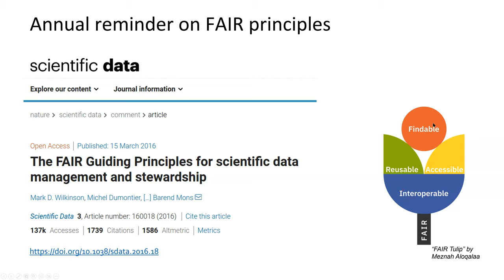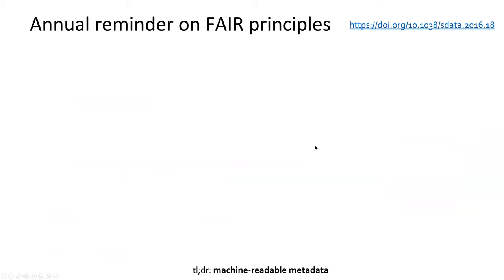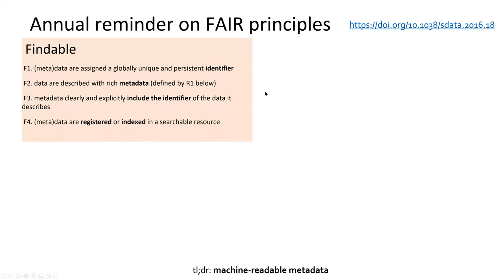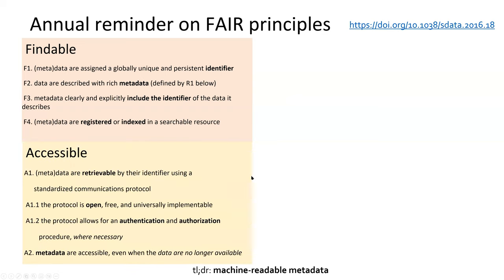One view is that interoperable should be at the bottom, because that's the basis for everything else. Looking at the actual FAIR principles: findability requires identifiers and describing data using metadata, including the identifier in the metadata — people seem to forget that — and registering it in a searchable resource repository. For accessibility, data needs to be retrievable using some protocol, hopefully open and free.